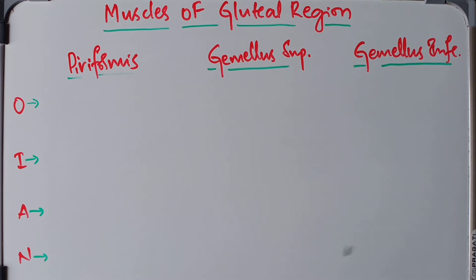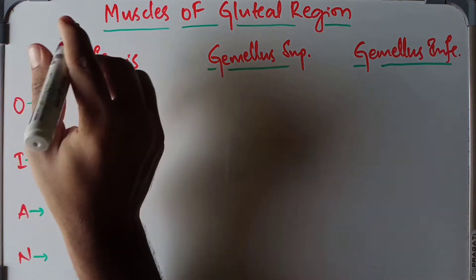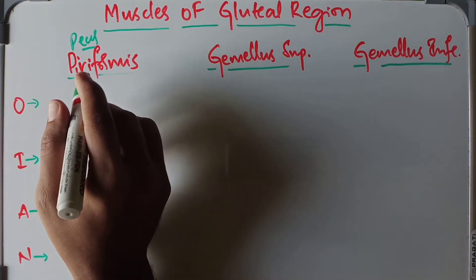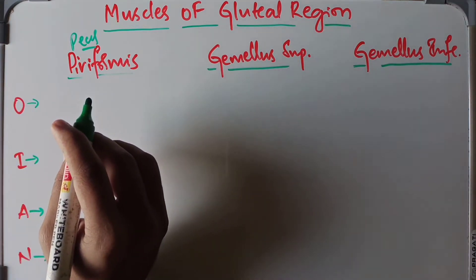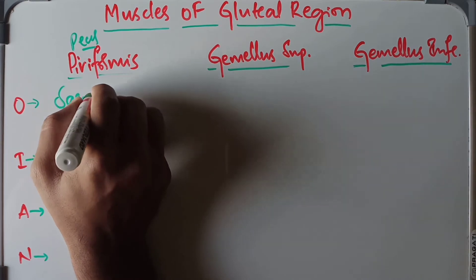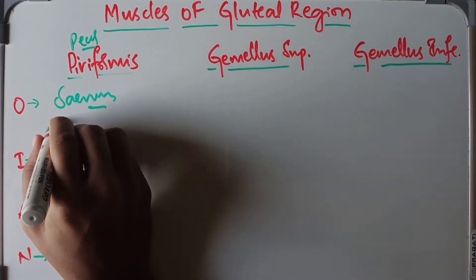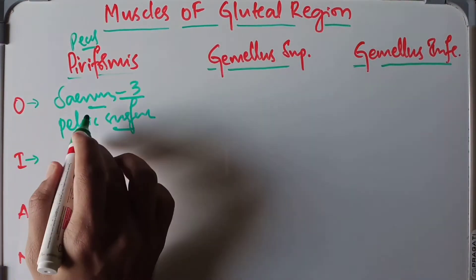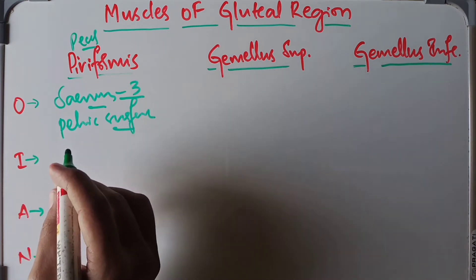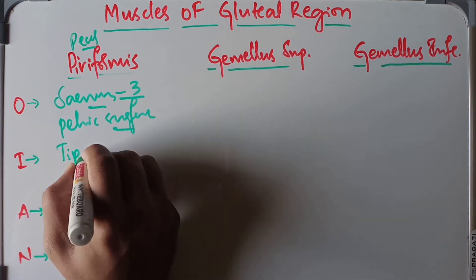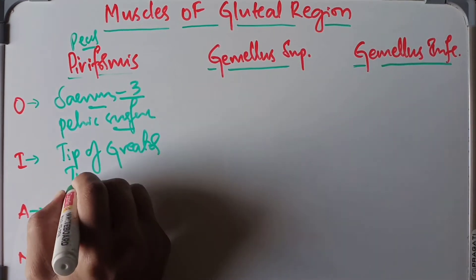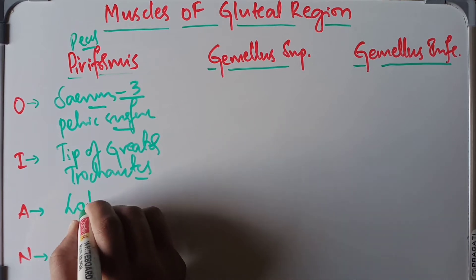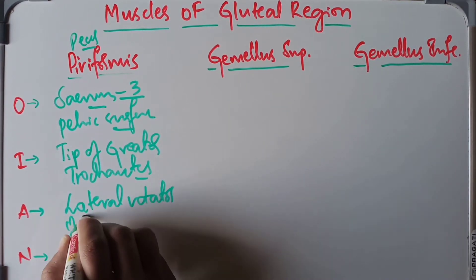Beginning with the piriformis — piriformis is a pear-shaped muscle. Its origin arises from the pelvic surface of the middle three pieces of the sacrum by three digitations. It is inserted into the tip of the greater trochanter of the femur. The action of the piriformis is lateral rotation of the hip joint.